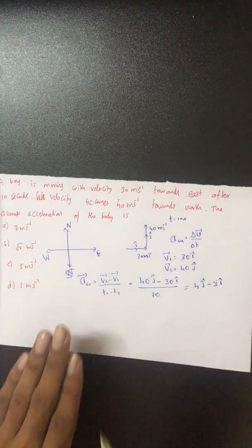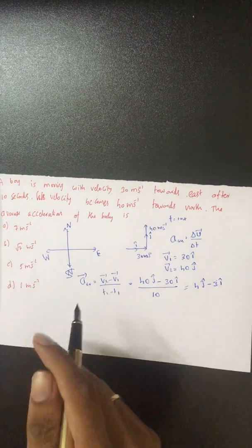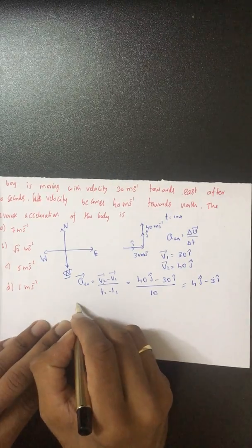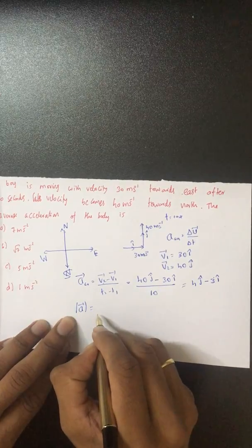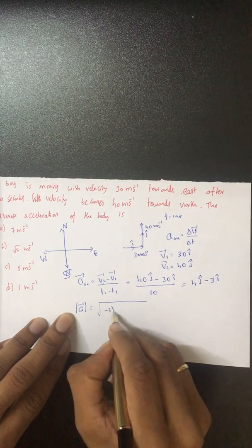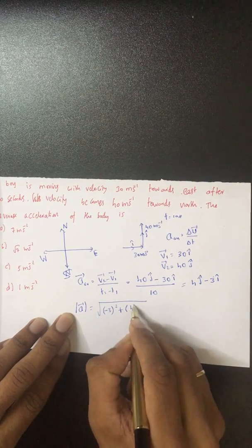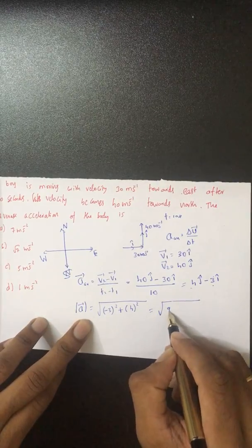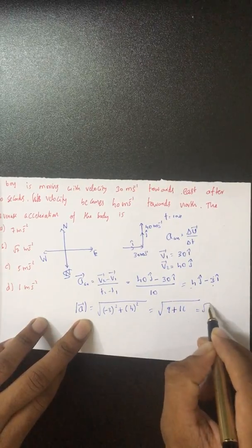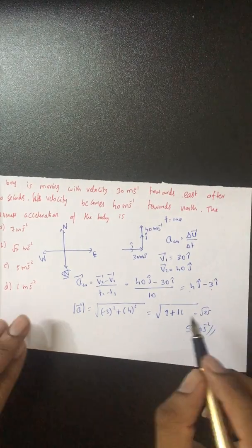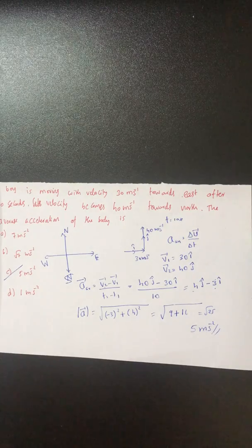The answers are in terms of magnitude. Magnitude of average acceleration equals square root of ax squared plus ay squared, which is square root of 3 squared plus 4 squared, equals square root of 9 plus 16, that is square root of 25, which equals 5 meters per second squared. Answer C.